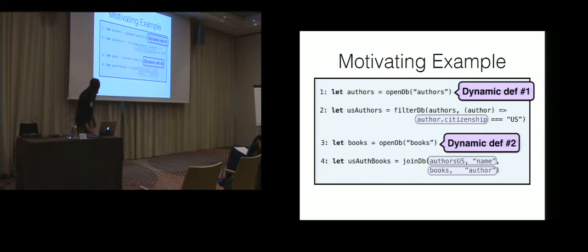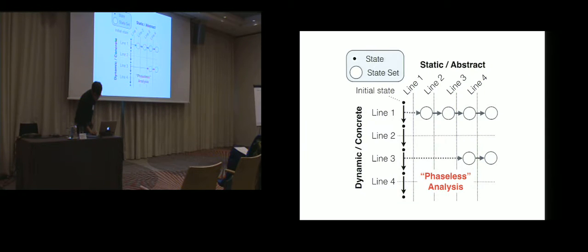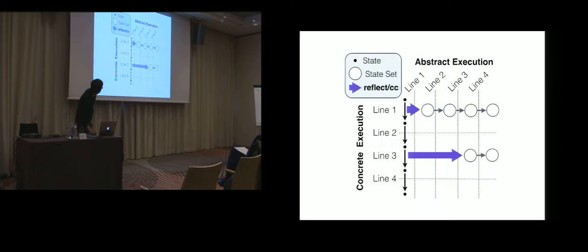So going back to that example and the picture that I showed you before. The trick, the technical trick is that we want the programmer who makes, say, the library in this case, the database library, to have some way whenever they open a database to go into this reflective mode where they can reflect the current continuation and sort of check properties about it. So the database author, the database library author is now also like a type system author. And they're going to use some concept called Reflect CC to do this.